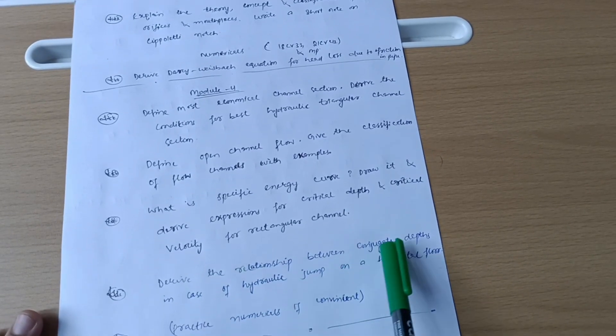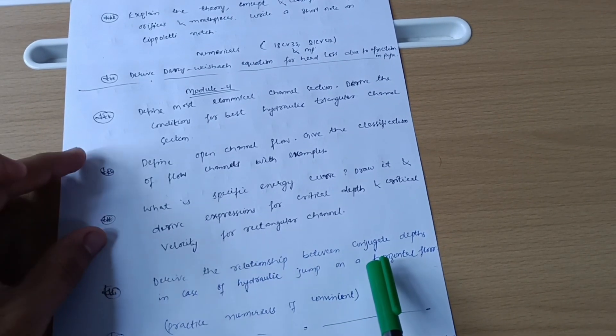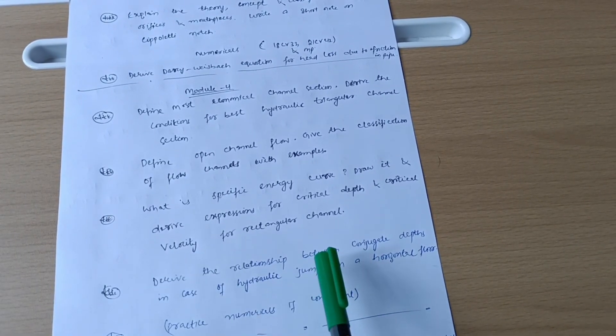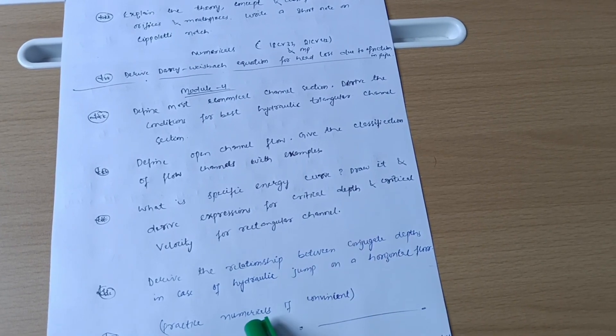Next is derive the relationship between conjugate depths in case of hydraulic jump on a horizontal flow. So these are four super important questions which may appear in the examination. These are the only chances. Next is practice numericals if you are convenient.